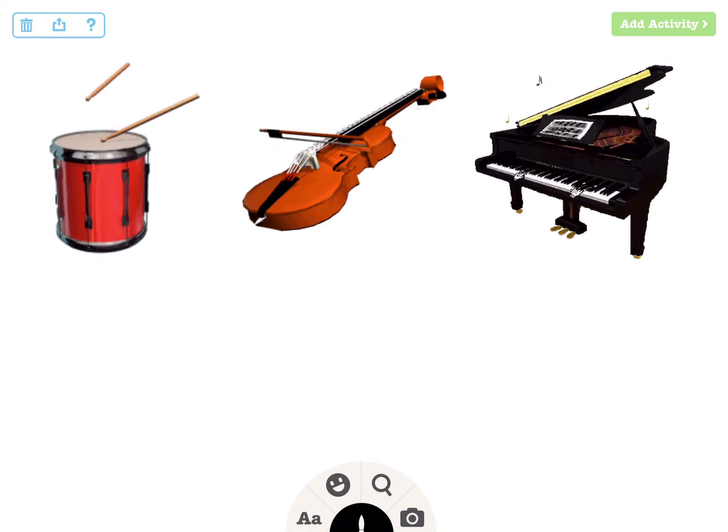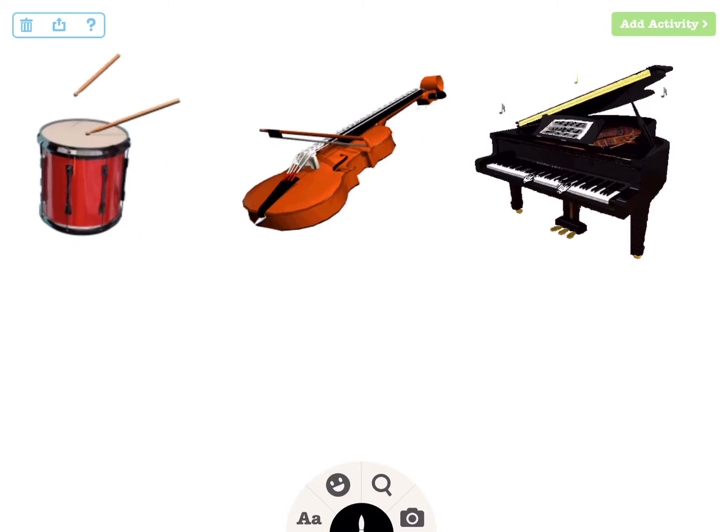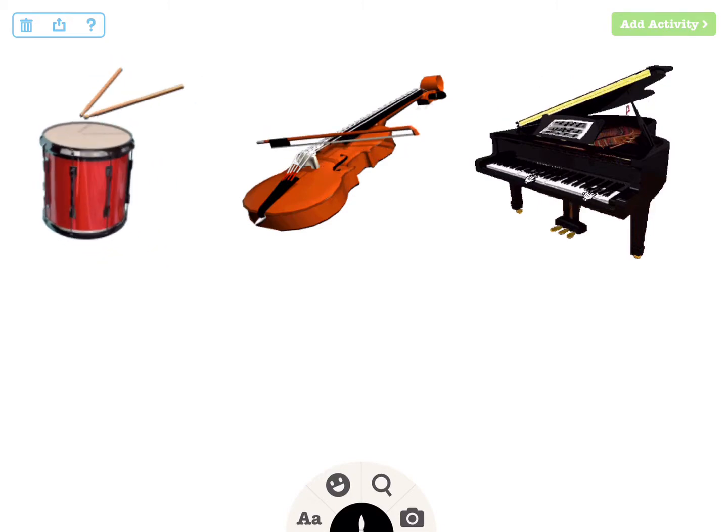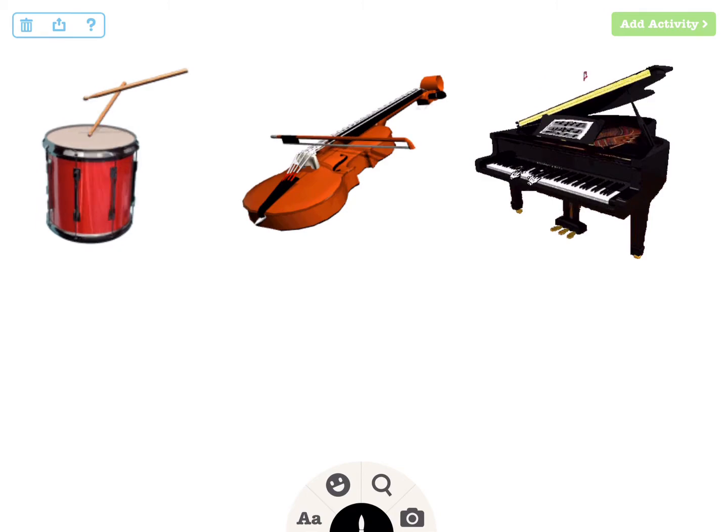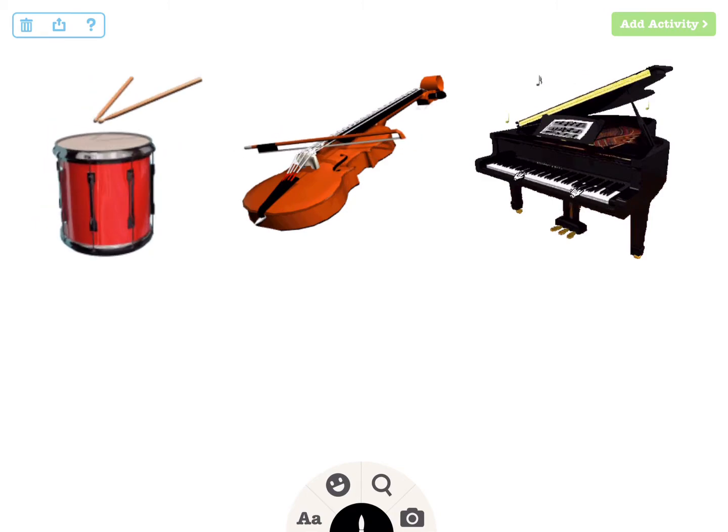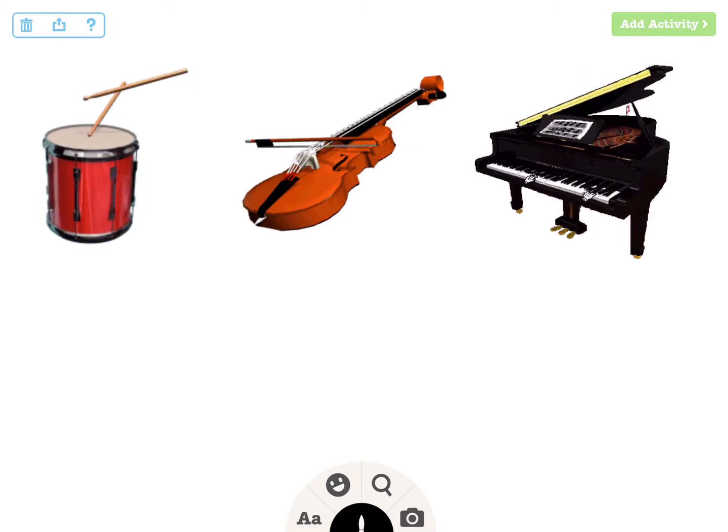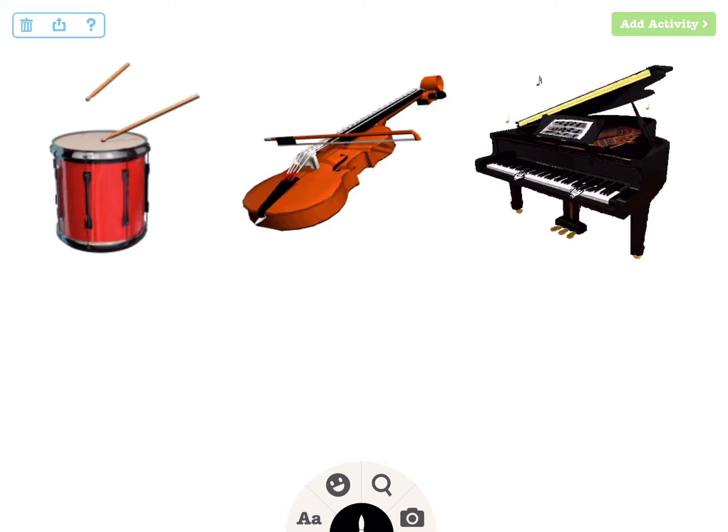This means, for example, that a sequencing activity should be arranged in the correct order, a vocabulary activity should be designed with the matching words in place, and so on. You'll carve the pieces out in the next step, but the initial design should always look like your puzzle has already been solved. In this demo, we'll arrange the words drum, violin, and piano directly underneath their corresponding instruments.